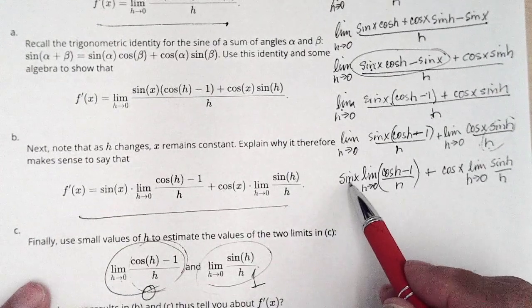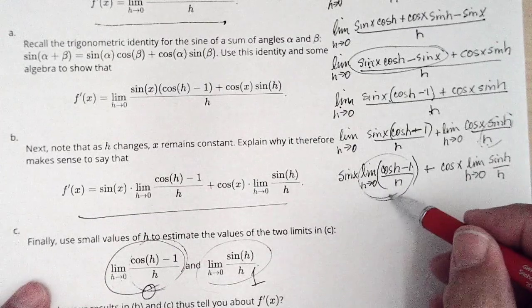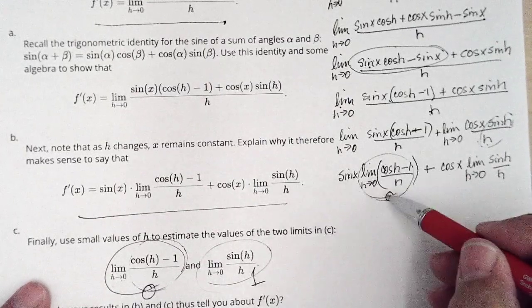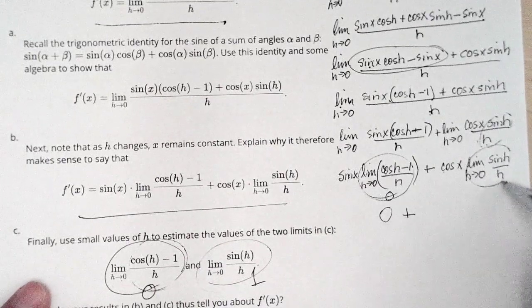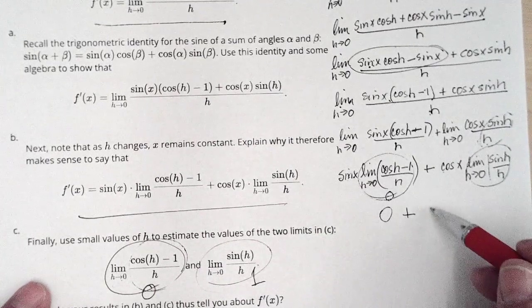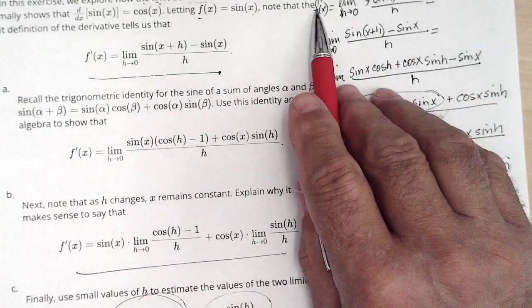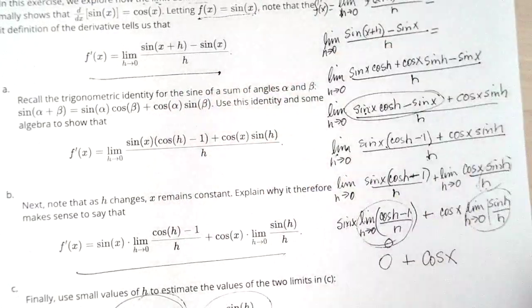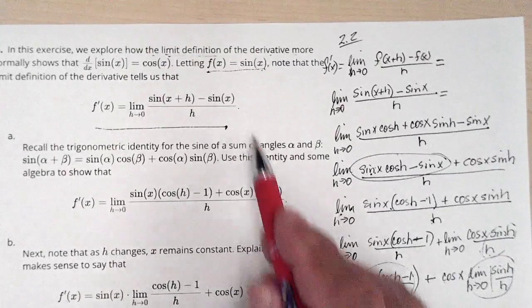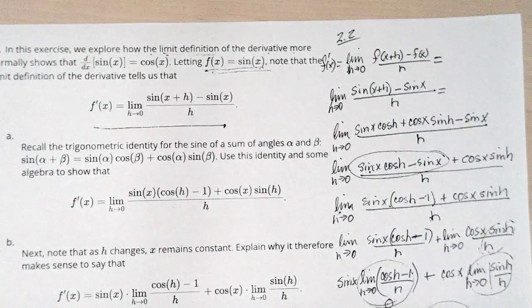So putting it together: sine x times the limit of cosine h minus 1 over h, which turns out to be 0 — so sine x times 0 is 0 — plus cosine of x times 1 is cosine x. So it appears that the derivative of sine of x is cosine x.